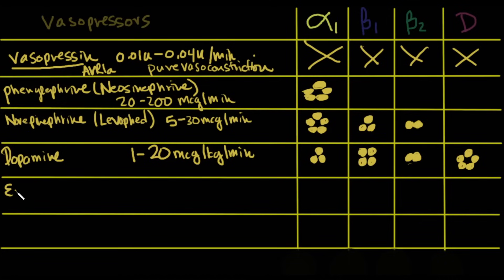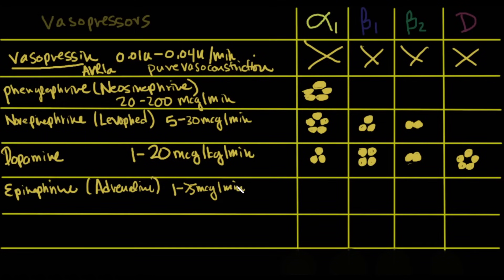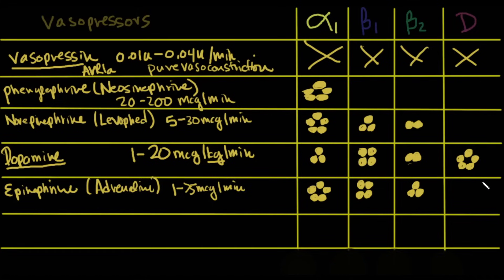Next is epinephrine, also called adrenaline. Both norepinephrine and epinephrine are made in the adrenal medulla. The typical dose is 1 to greater than 5 micrograms per minute. Epinephrine hits the alpha-1 receptor very hard — 5 out of 5 — and also hits beta-1 strongly at 4, and beta-2 at 3. Since alpha outweighs beta-2, you get net vasoconstriction, but you also get significant cardiac stimulation with no dopaminergic activity.